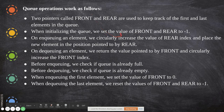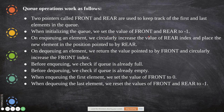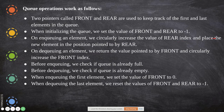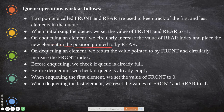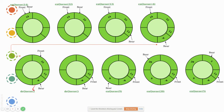Queue operations work as follows: two pointers, front and rear, are used to keep track of the first and last elements in the queue. When initializing the queue, we set both front and rear to minus one — index starts from zero, so minus one indicates an empty queue. On enqueue, we circularly increase the rear index and place the new element at that position. On dequeue, we return the value pointed by front and circularly increase the front index.